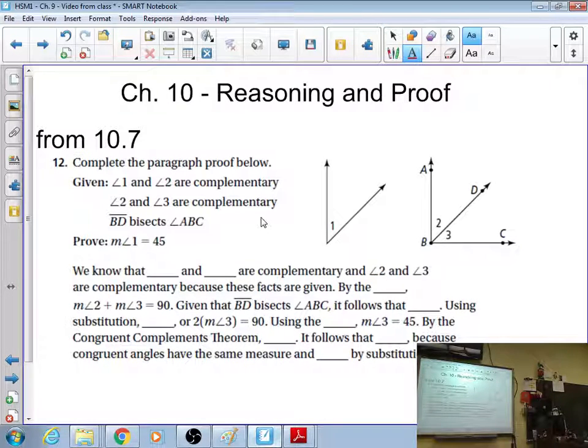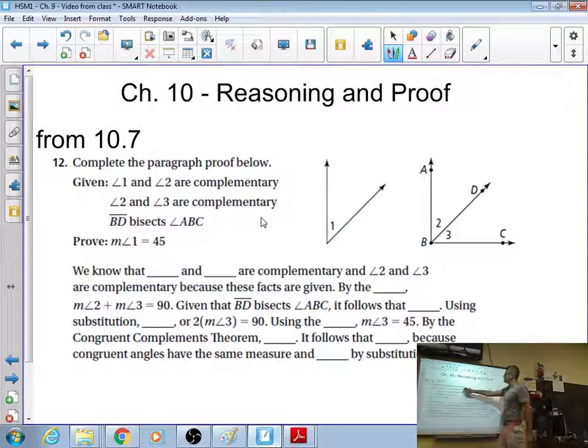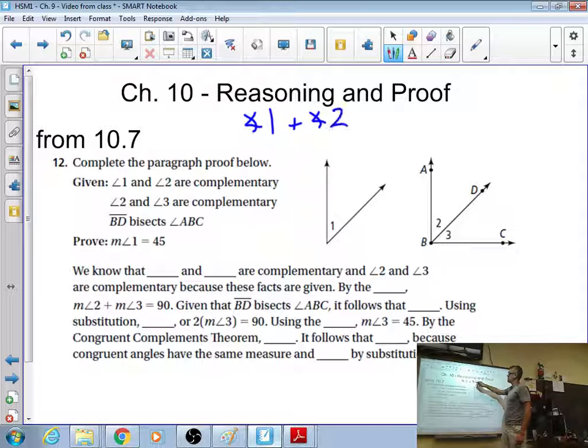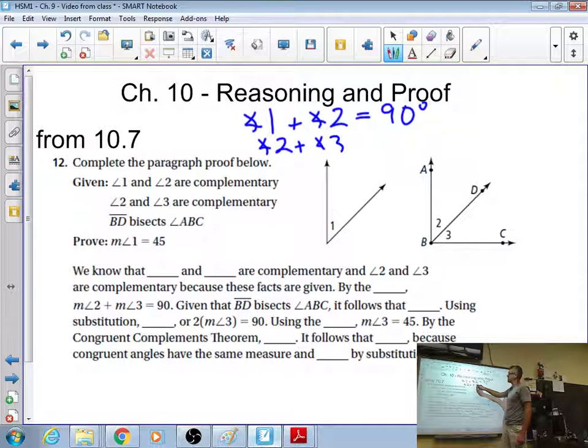The corny way that I try to get people to remember this. To complement someone is the right thing to do. You take supplements to get bigger. So, complementary, 90 degree angles. So, what this is really telling me, if I rewrite this, if I rewrite my given statements, is angle 1, and that means, like, the size of the angle, plus angle 2, is 90 degrees.